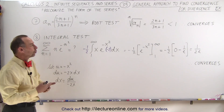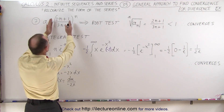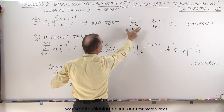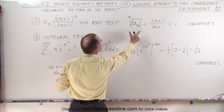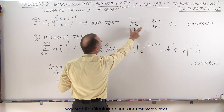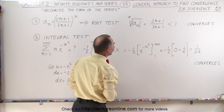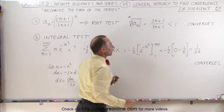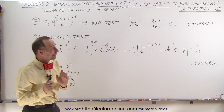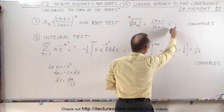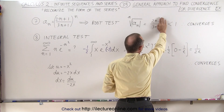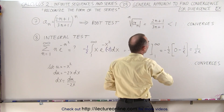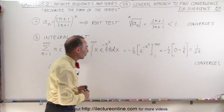Therefore we use what we call the root test. We take the n-th root of the argument, and of course we want to make sure we take the absolute value of that. The n-th root of this is equal to (2n plus 1) divided by (3n plus 1). Now if that is less than 1 — and it always will be as n gets larger, since the plus 1 becomes insignificant — we always get the ratio 2 over 3. Therefore we know that this series converges.